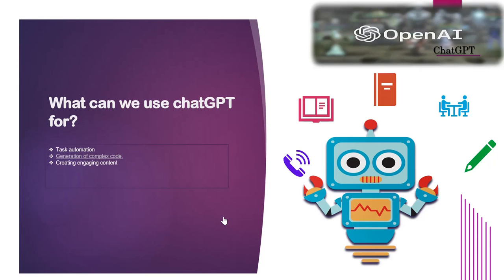ChatGPT can answer in human-like text, so it can obviously help you in creating engaging content. It can generate text in a wide range of styles and formats, including news articles, stories, books, and other written content. It can also perform data analysis and research for you. Combined with code generation and task automation, it will increase your productivity by 10 times your current productivity, making it a very revolutionary and miraculous tool.